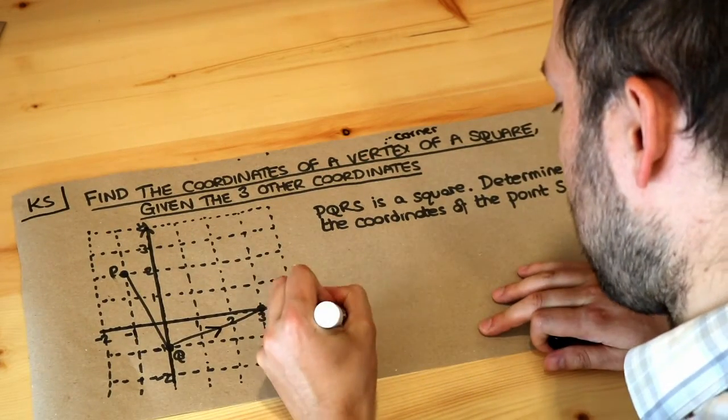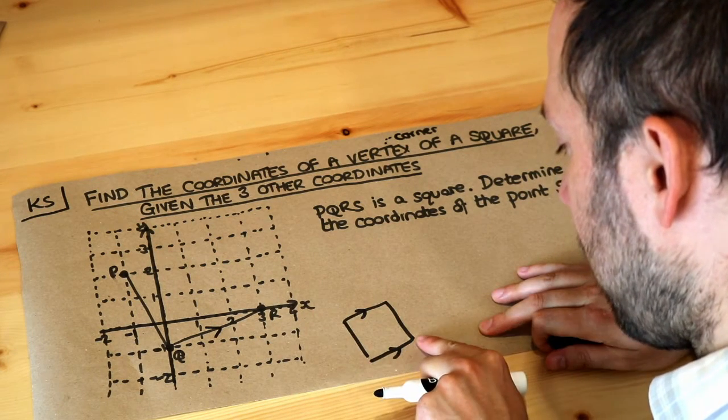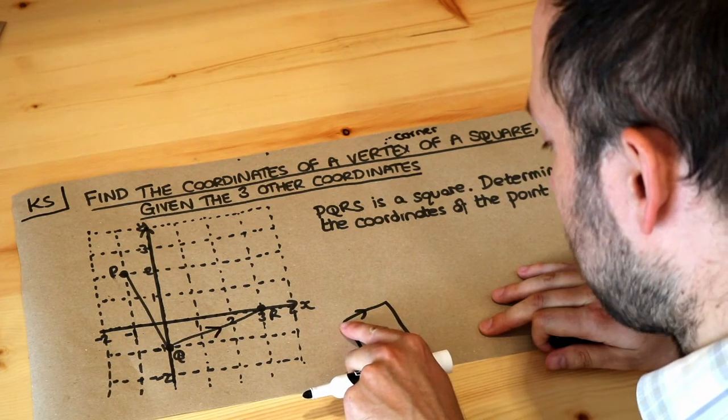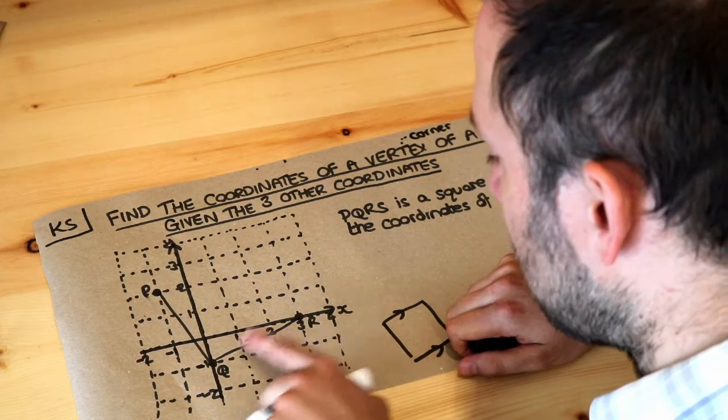Because if I just draw a square, can you see the movement from this point to this point will be the same as what you have to move to get from this point to this point. So let's see from this point to this point what we're doing.